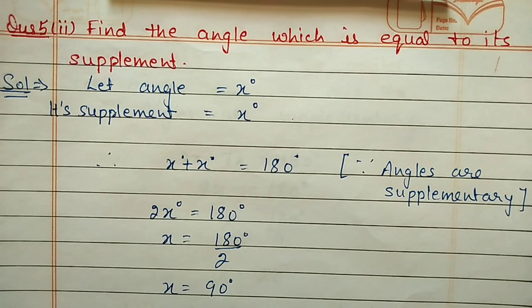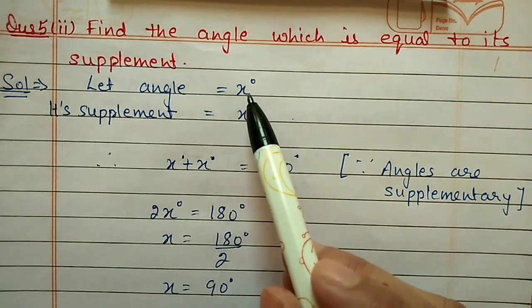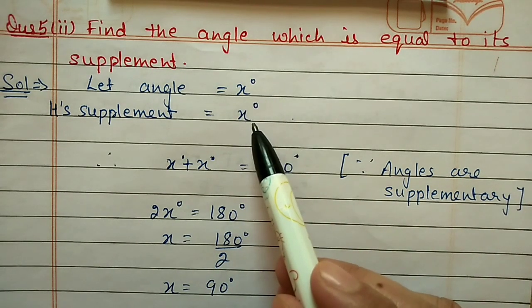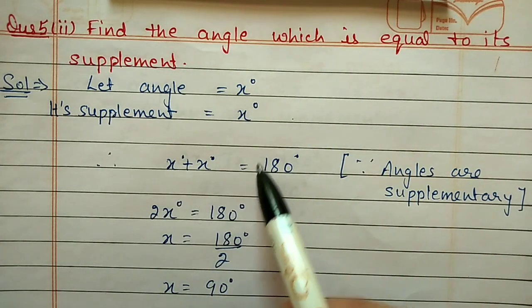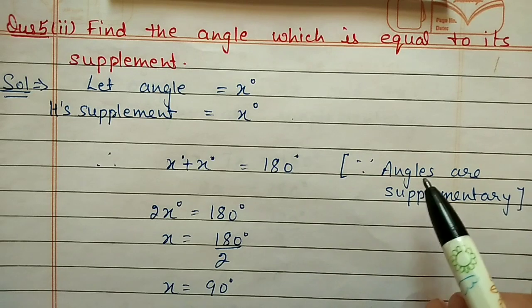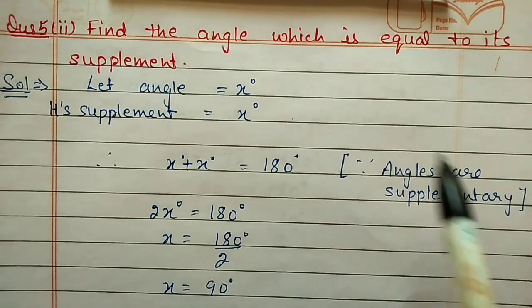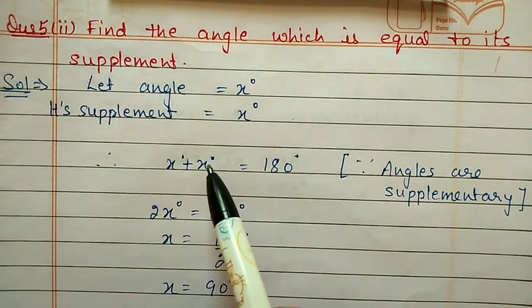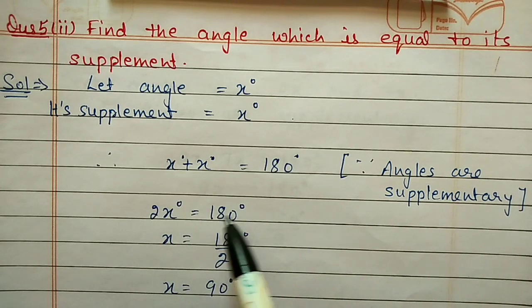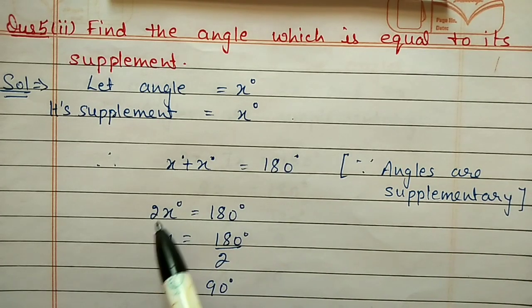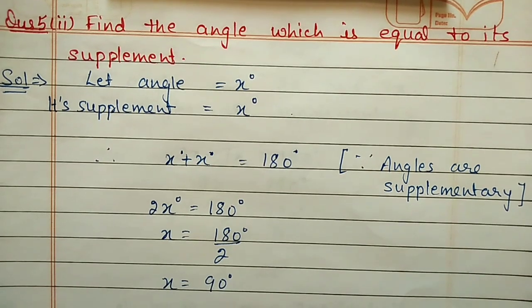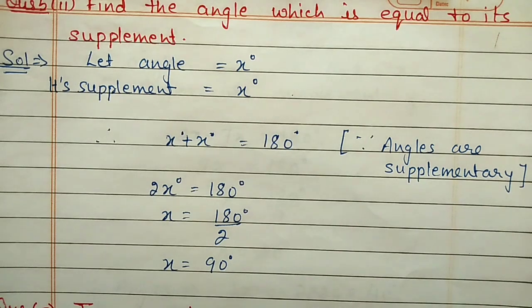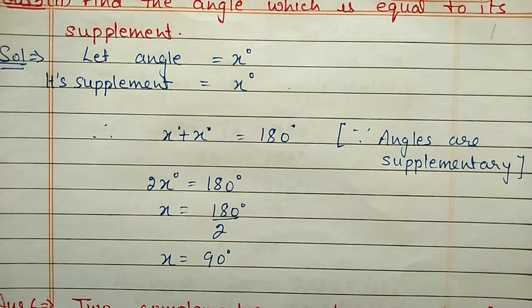Second part: find the angle which is equal to its supplement. Let the angle be x and its supplementary angle also x since both are equal. Then x plus x equals 180 degrees because these two angles are supplementary. So 2x equals 180 degrees, and shifting 2 to the other side, 180 divided by 2 is 90 degrees. So x equals 90 degrees — both angles are 90 degrees.